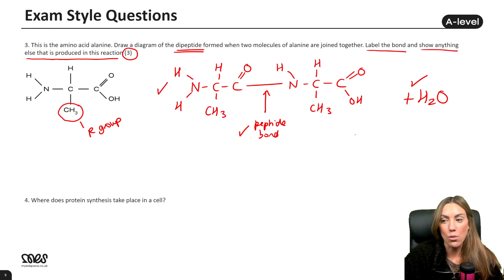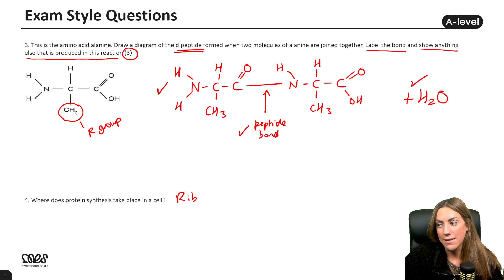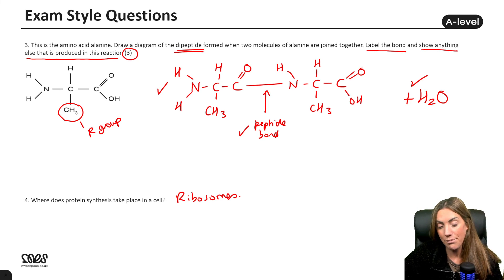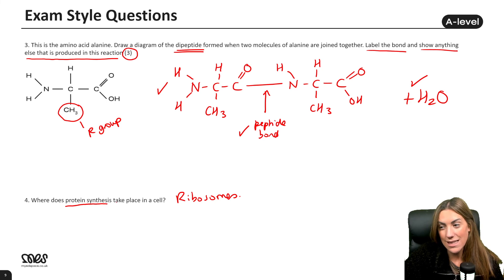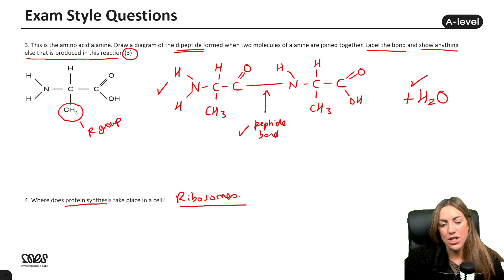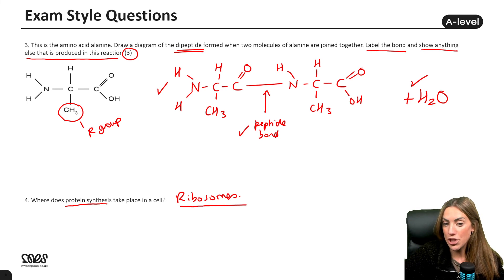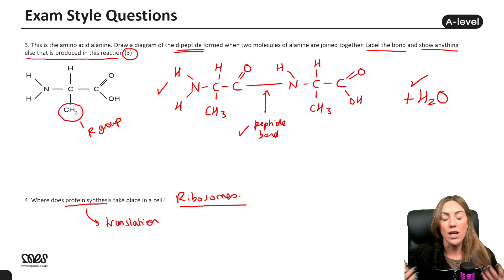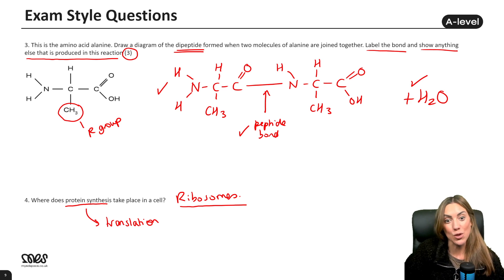Finally, question four — a link back to GCSE: where does protein synthesis take place in the cell? At the ribosomes. There are ribosomes in the cytoplasm and also ribosomes on the surface of the rough endoplasmic reticulum. This links to our topic because at the ribosomes, amino acids are joined together — the condensation reactions happen and peptide bonds are formed to produce the polypeptide. More specifically, it is translation — the second stage of protein synthesis — that occurs at the ribosomes, which you'll learn later in Year 12.